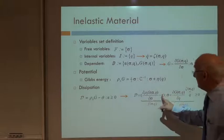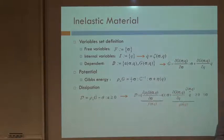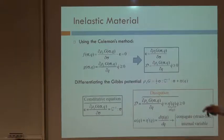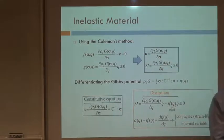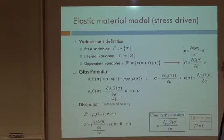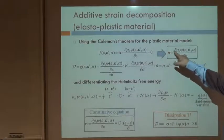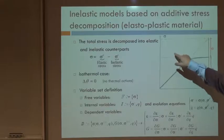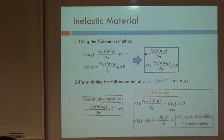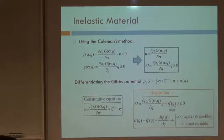Finally, we obtain that epsilon is the derivative of rho zero G with respect to sigma, because this term has to be zero. This is the inverse constitutive equation. The strains are obtained just by differentiation of the Gibbs energy with respect to the stresses. In inelastic strain-driven materials, the stresses were the derivative of the free energy with respect to strains. Now we have the opposite: the strains are the derivative of the Gibbs energy with respect to stresses. As soon as you postulate a Gibbs energy, you have the strains and the inverse constitutive equation.